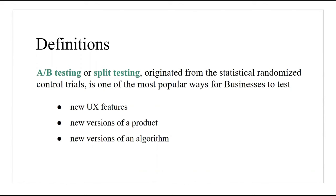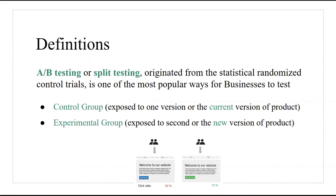The idea behind A/B testing is that you show the varied or new version of the product to a sample of customers, often referred to as the experimental group, and the existing version to another sample of customers referred to as the control group. The difference in product performance between experimental and control groups is tracked to identify the effect of the new version. The goal is to track the metric during the test period and find out whether there is a difference in performance, with motivation to test new product variants that will improve and optimize the existing product.